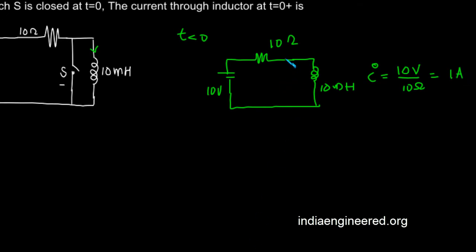That means one ampere current is flowing through the inductor in this manner. What happens to the current at t equal to zero plus? We know that the current through an inductor does not change abruptly, so at t equal to zero plus and t equal to zero minus we have the same current, that is one ampere.